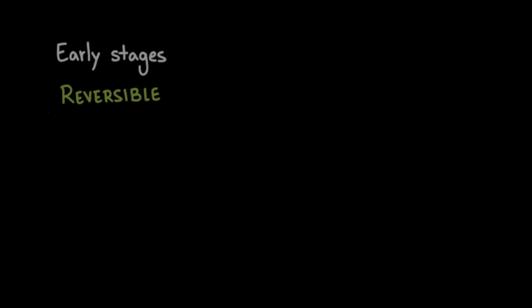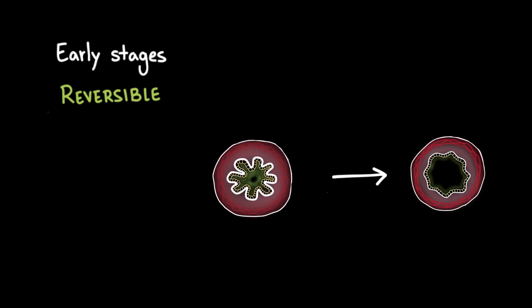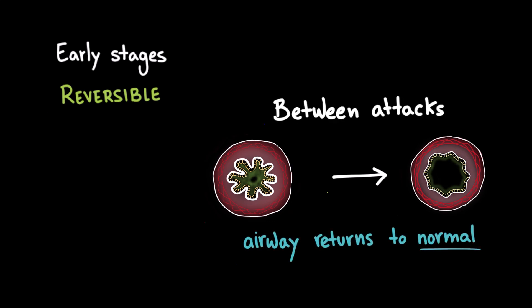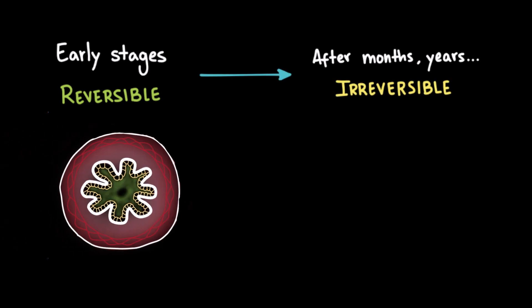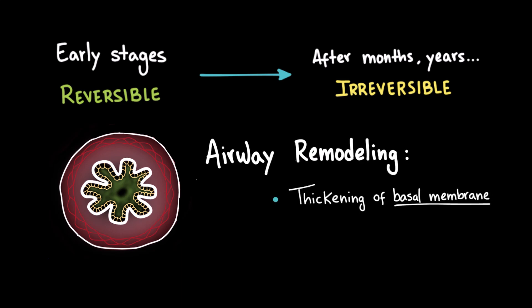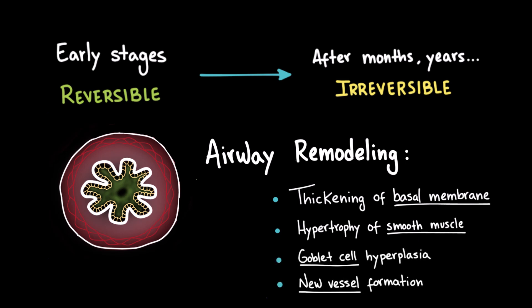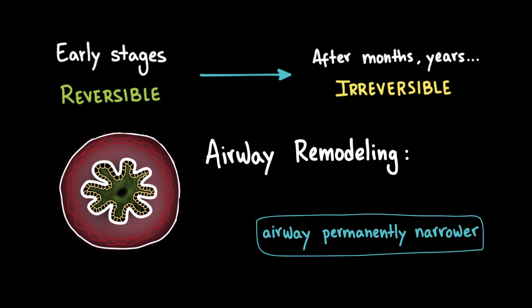The good news is that in the early stages, these airway changes are completely reversible. They usually occur only during asthma attacks, and between attacks the airways can return to normal. But if asthma attacks keep happening over months or years, the repeated inflammation can lead to irreversible structural changes, a process called airway remodeling. This includes thickening of the basement membrane, hypertrophy of smooth muscle, goblet cell hyperplasia, and even new blood vessel formation in the airway wall, which allows more inflammatory cells to enter. Over time, these structural changes make the airways permanently narrower and more reactive, even when there's no active attack. That's why early and consistent treatment is so important.